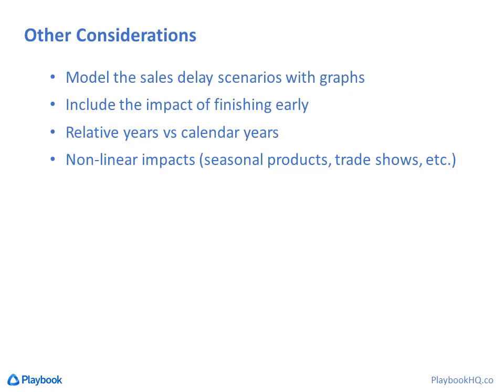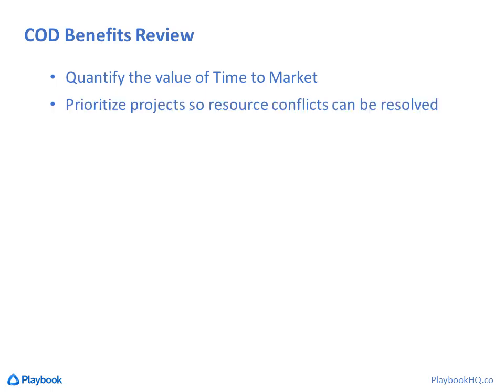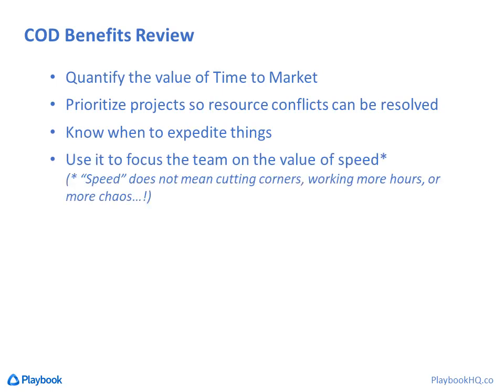Let's review the benefits. You most likely hear senior management talk about the value of speed, but rarely with a number attached. If you do this, you'll finally be able to attach a dollar figure to that general directive. Once you know your cost of delay for each product, you can prioritize projects and resolve conflicts easily. Team members will know when it makes sense to expedite things and will be much more sensitive to the importance of schedule.